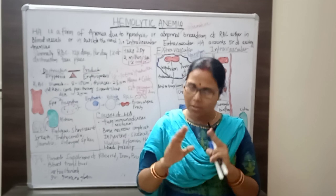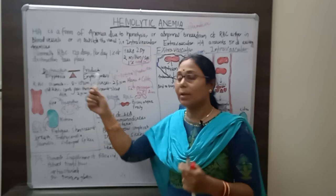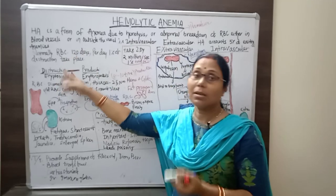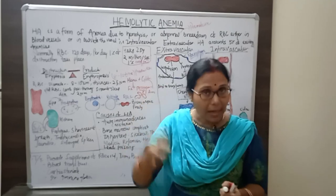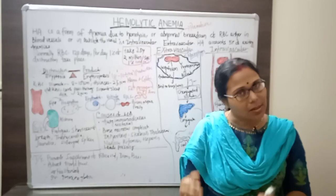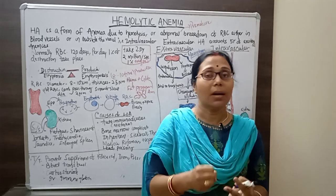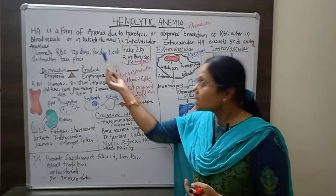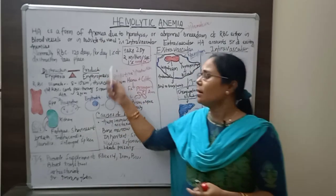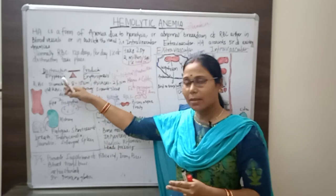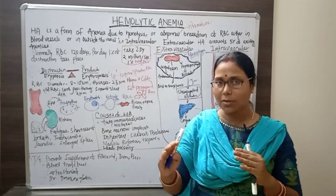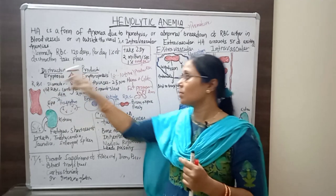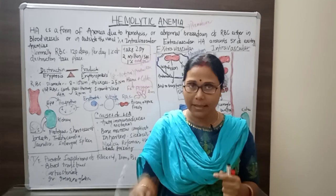However, when the bone marrow cannot produce enough RBCs and the destruction rate is greater than the production rate, the hemoglobin level decreases. This reduces the oxygen-carrying capacity of the blood, leading to insufficient oxygen delivery to different parts of the body — a state called hypoxia — and that condition is called anemia. When destruction increases and production decreases beyond what the body can compensate, we call it hemolytic anemia.